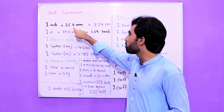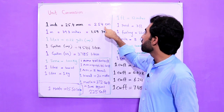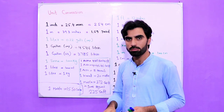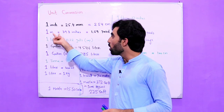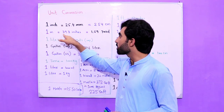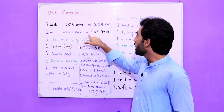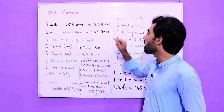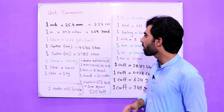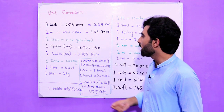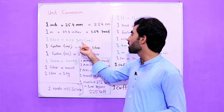In one inch we have 25.4 millimeters and 2.54 centimeters. Now, in one meter we have 39.3 inches and 1.09 yards. One liter is equal to 0.22 gallons — but imperial gallons, not US gallons.